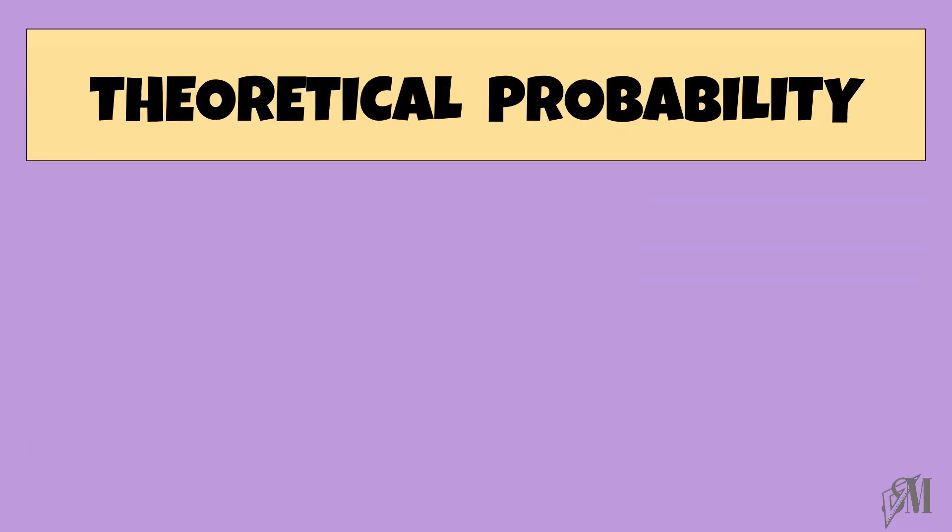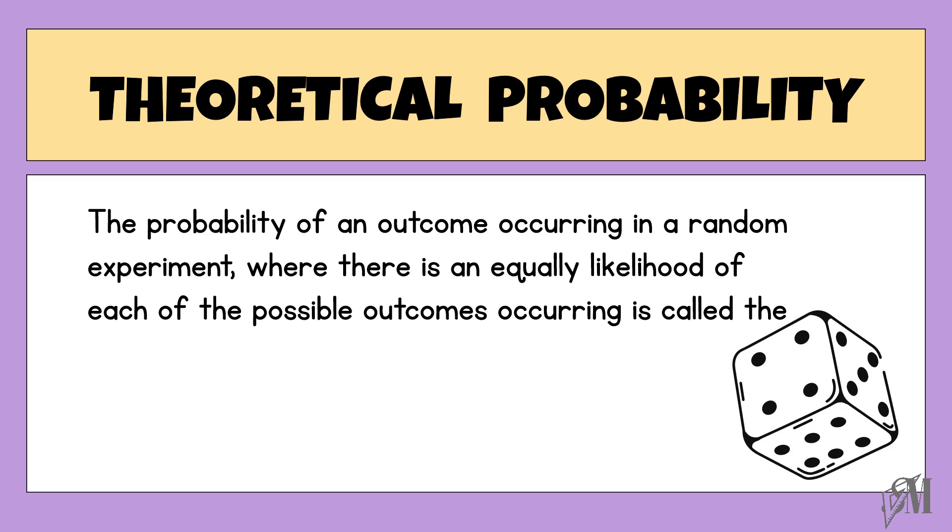The next type of probability we have to discuss is the theoretical probability. The probability of an outcome occurring in a random experiment where there is an equal likelihood of each of the possible outcomes occurring is called the theoretical probability.